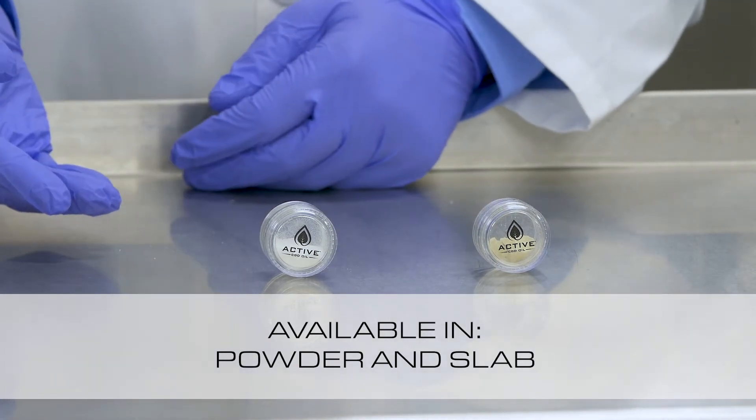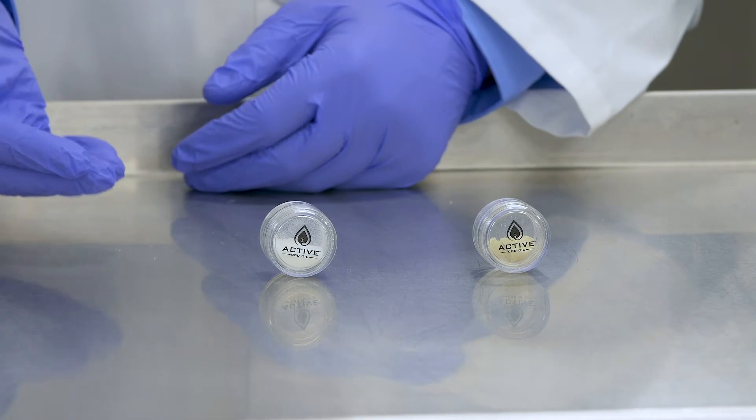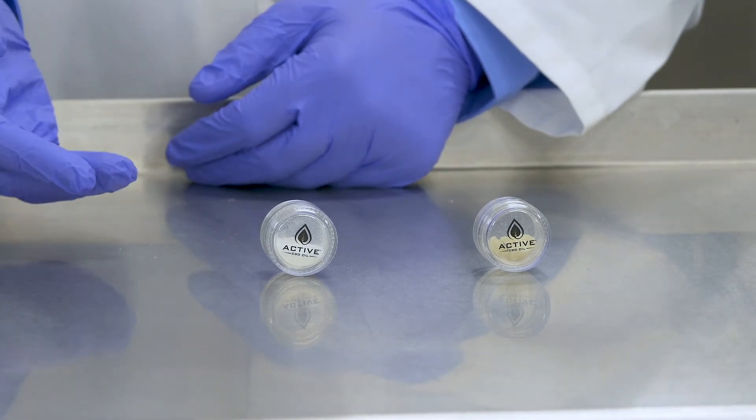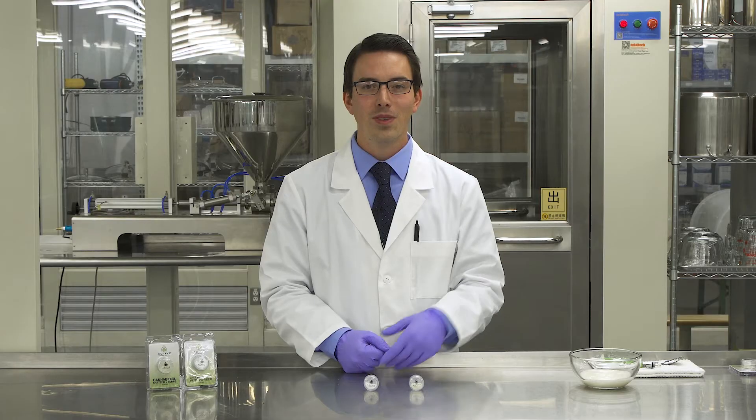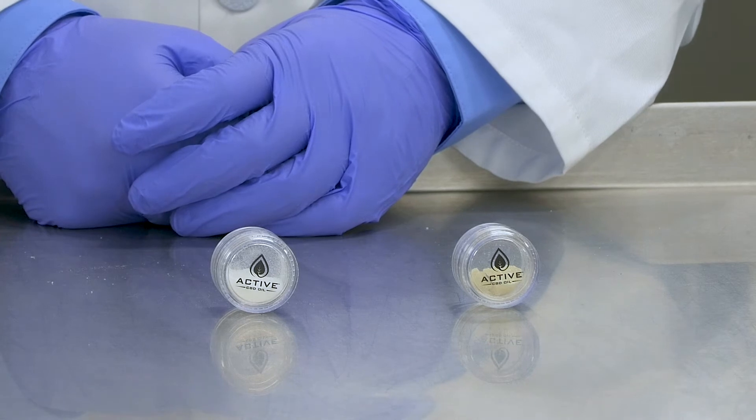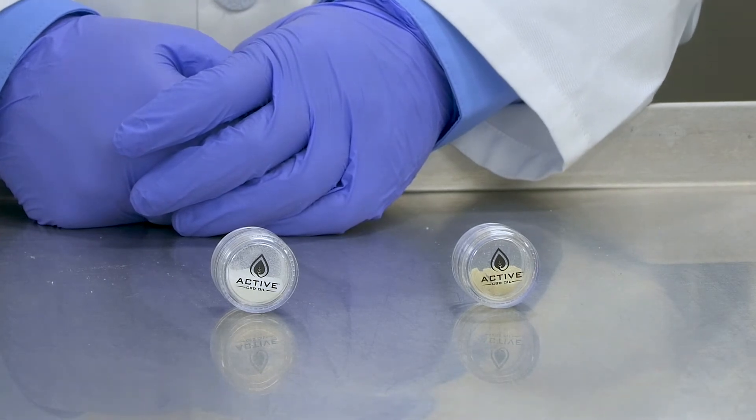Powder is traditionally used in baking and cooking, but can also be used to make your own CBD products like a tincture or a salve. The CBD slab traditionally is vaporized, but can also be used to make CBD products and in cooking.